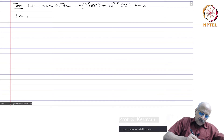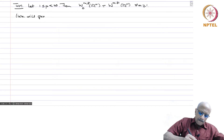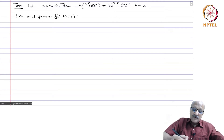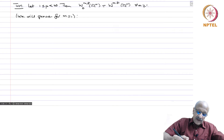We will prove this for m = 1; the rest will follow by iteration, and therefore it is enough to prove for m = 1, as you can see from the proof. We will prove this somewhat carefully so that this technique will be used frequently in the sequel, and therefore it is good to know it.